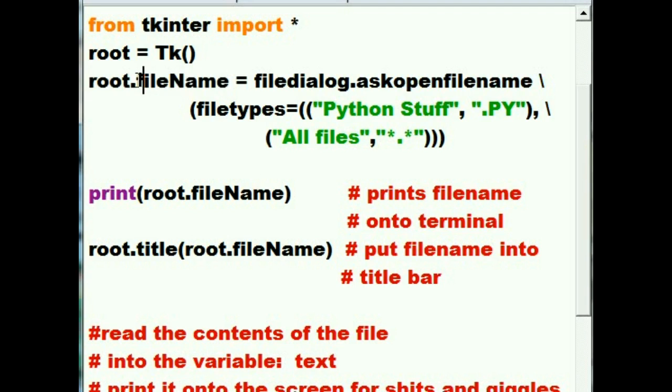All right, so the file name will be in here in this variable, appropriately named file name. Then I want you to print out the contents of root's file name onto the terminal. And then I want you to take root's file name and put it into root's title bar. That'd be nice.